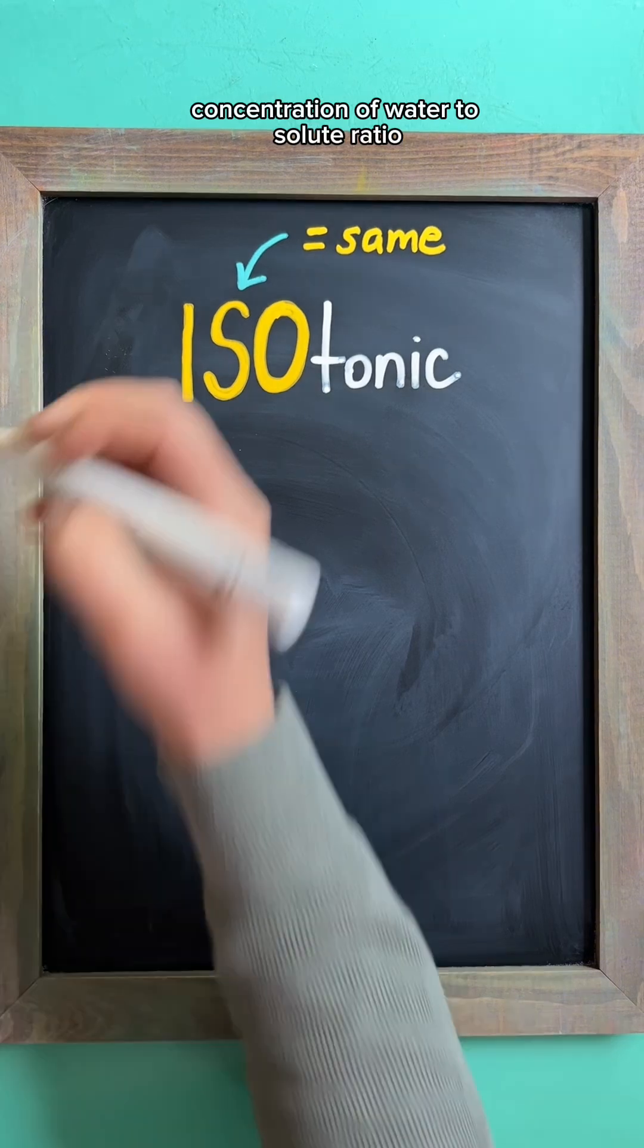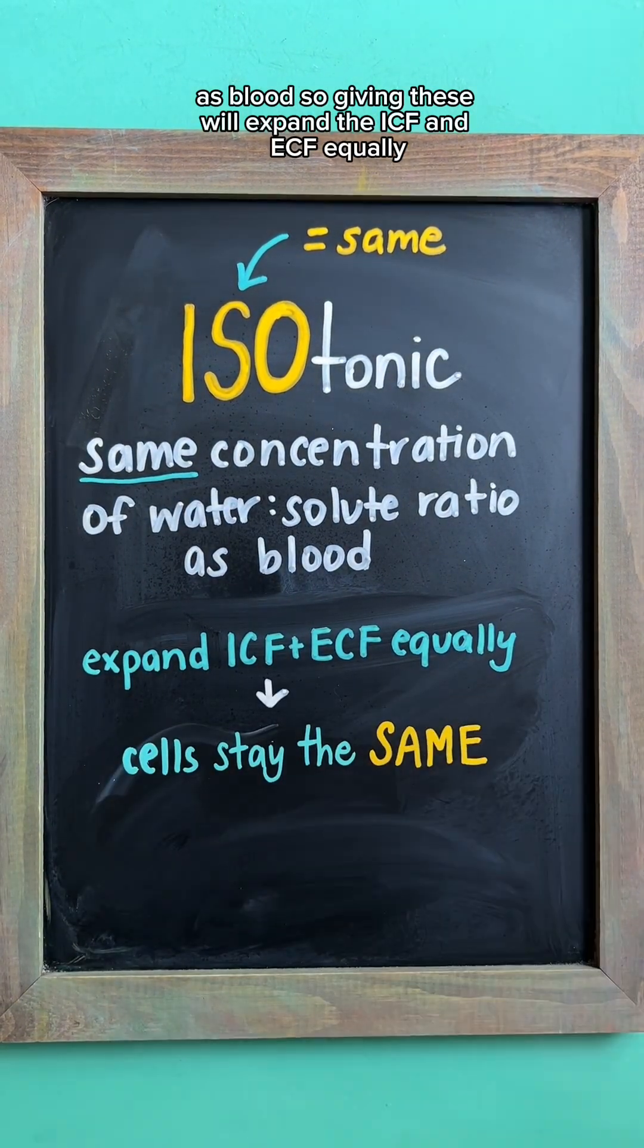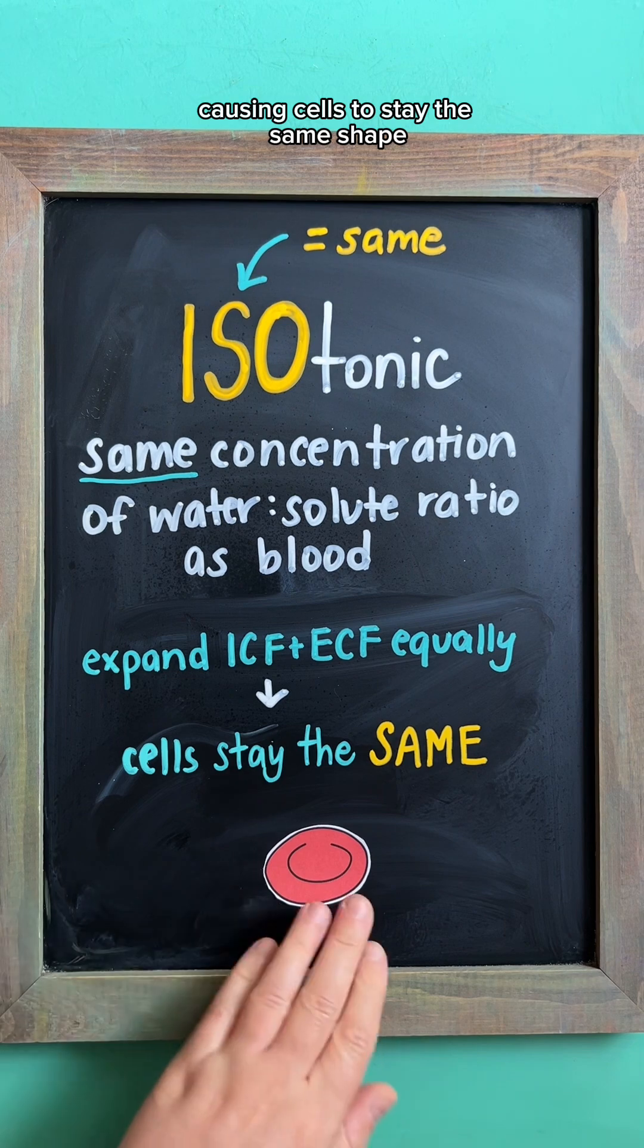Isotonic fluids have about the same concentration of water-to-solute ratio as blood, so giving these will expand the ICF and ECF equally, causing cells to stay the same shape.